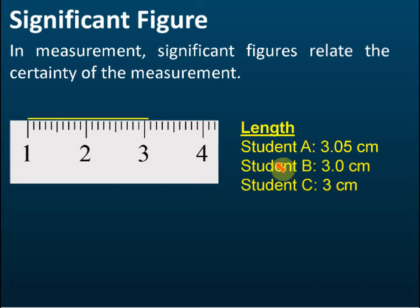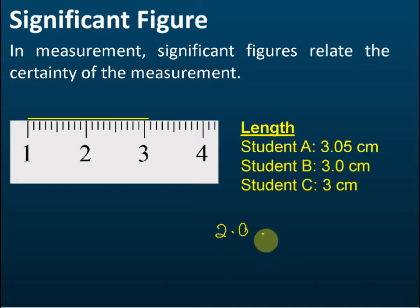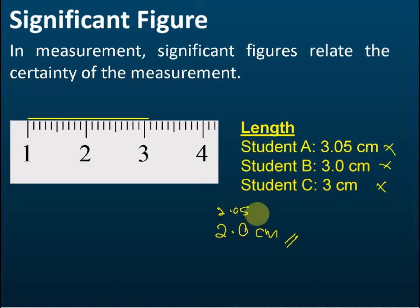Which student is correct about the number of significant figures for this measurement? Most of you say A. Now let me tell you — the correct answer is 2.0. It's not 3, it's also not 3.05, and it's also not just 3 — it's 3.0, which is two significant figures.